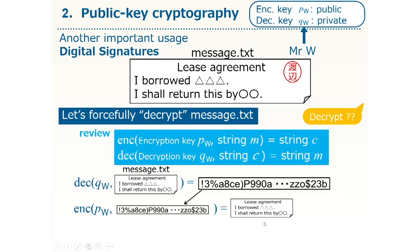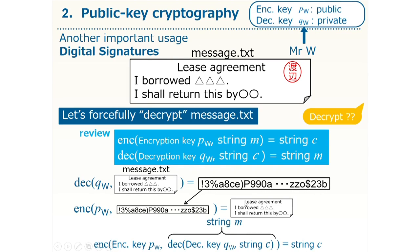Let's think about how that happens. Let's ignore the meaning of m and c and just think of them as strings. Then, application of these functions can be seen as transformations from m to c and c to m. If you apply the function dec to the string c, you would get the string m. Then, if you apply further the function enc to this m, you would get back to the string c. Mathematically, the function dec is the inverse function of enc, and symmetrically, enc is the inverse function of dec. That is why the original message is obtained by applying the function enc with the encryption key.